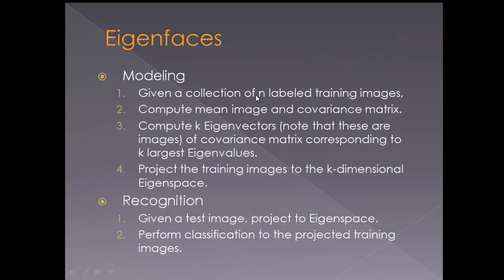Given a collection of n labeled training images, we compute the mean image and the covariance matrix. Then we compute the k eigenvectors of the covariance matrix corresponding to the k largest eigenvalues. We will see all of this in detail with the code. We project the training images to the k-dimensional eigenspace to build the model. For recognition, we take a test image, project it onto the eigenspace, and classify it based on the nearest distance measure.